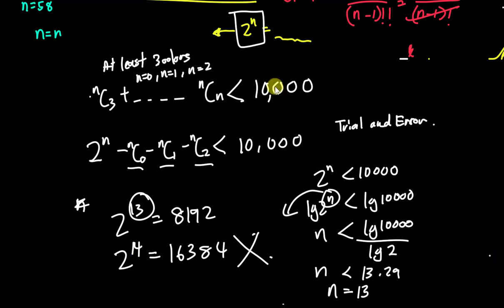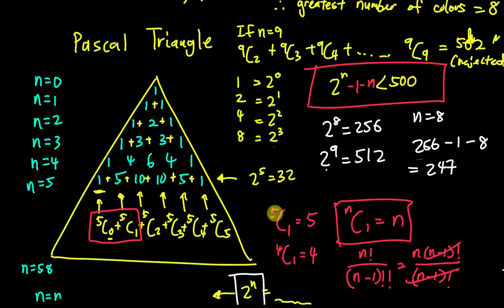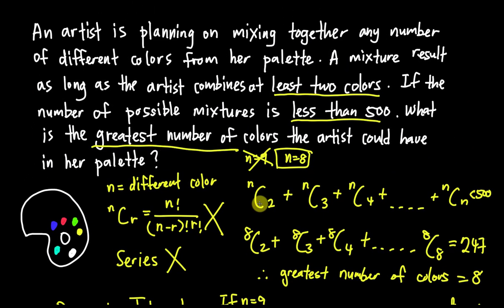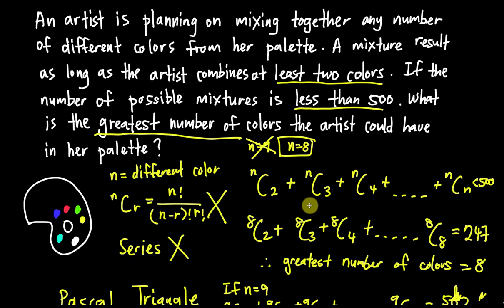Key takeaways from this video: know how to write Pascal's Triangle, understand that each number represents NCR, and remember that the sum of each row equals 2^N, starting from NC0. If you have similar questions in future, use 2^N and subtract the terms you don't need. If you still have questions, comment below and I'll reply when I can. Thanks for watching — see you in the next video!